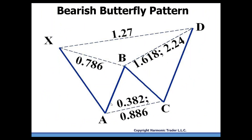The bearish butterfly pattern is a W extension formation. Starting with your X-point, go to the A. The B-point, again, very tight at the .786, has to be plus or minus 3% — that is the rule. That sets up our other C-point retracement. Within the W structure, the C-point cannot exceed A. That gives us our W formation to do our measurements up at the 1.27. This 1.27 X-to-A measurement possesses all three numbers we're looking for to define that zone.